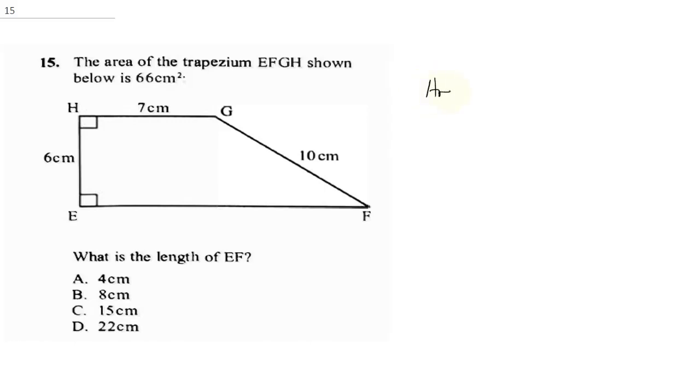Area will be half times sum of parallel sides, that's HG plus EF times the height. And our area is 66 equals 1 over 2 times our parallel side is 7 plus, now EF is not given, and our height is 6.